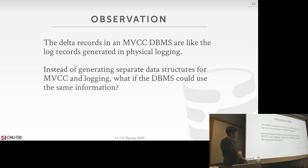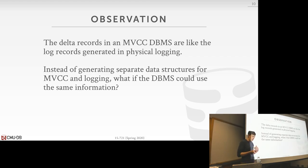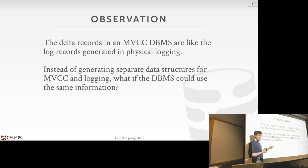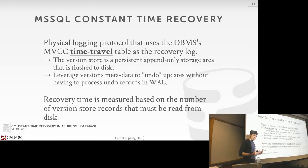In a multi-version system, the delta records generated for MVCC are more or less the same as what we'd generate for the log — though not exactly, depending on whether we're doing oldest-to-newest or newest-to-oldest, which affects whether we generate redo or undo records. The idea is: what if we combine the metadata we're generating for MVCC with the metadata for the log file, avoiding duplicated effort? That was the paper assigned for today, from VLDB 2019.